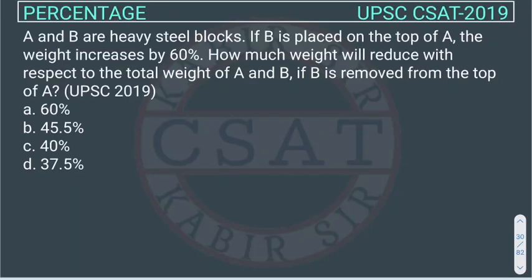This is the percentage question. This question was asked in UPSC CSAT 2019. The question is: A and B are heavy steel blocks. B is placed on top of A. The weight increases by 60%. How much weight will reduce with respect to the total weight of A and B if B is removed from the top of A?